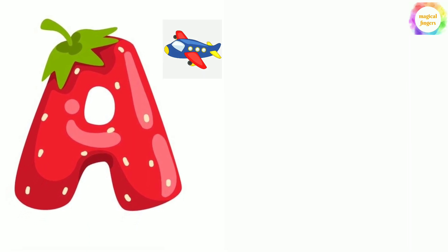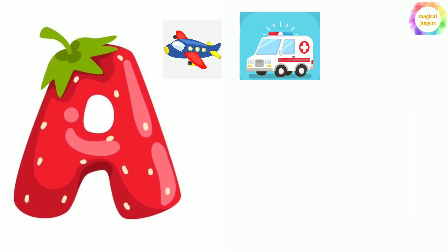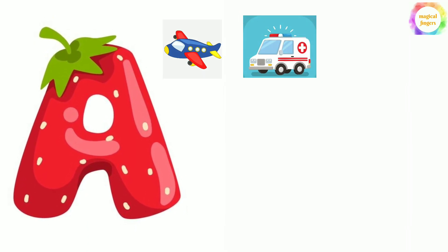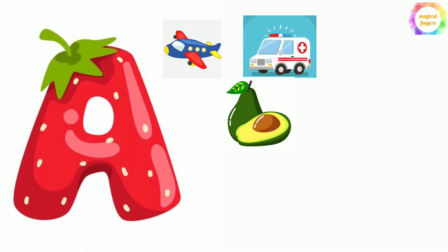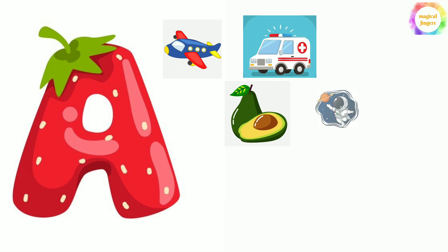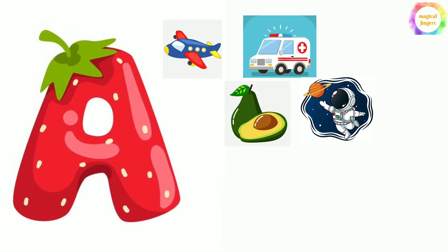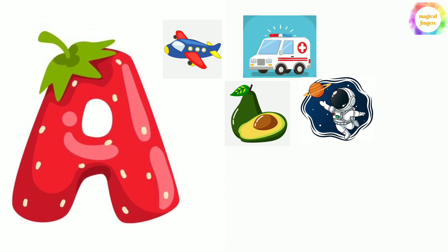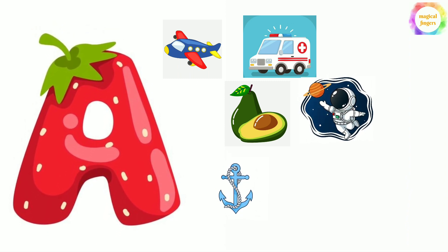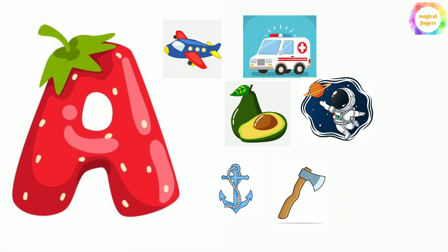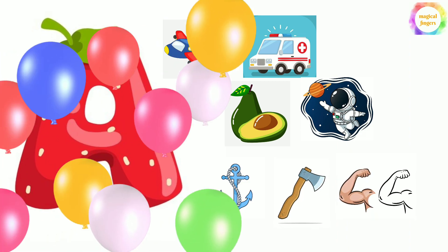A is for airplane. A is for ambulance. A is for avocado. A is for astronaut. A is for anchor. A is for axe.